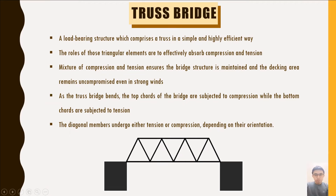A truss bridge is actually a load-bearing structure which encompasses a truss in a simple and efficient way. The mixture of compression and tension ensures that the structure of the bridge is upheld and the load-bearing area remains uncompromised. A single-span truss bridge is similar to a simply supported beam as it supports the vertical load by bending. When the truss bridge bends, the top chords are subjected to compression while the bottom chords of the bridge are subjected to tension. The vertical and diagonal members undergo tension or compression depending on their orientations.